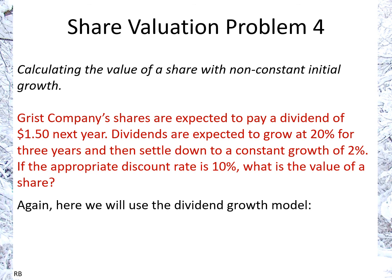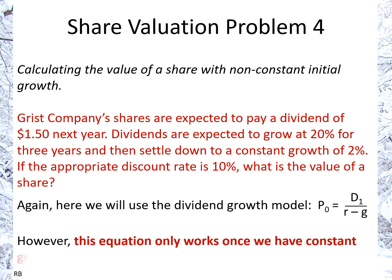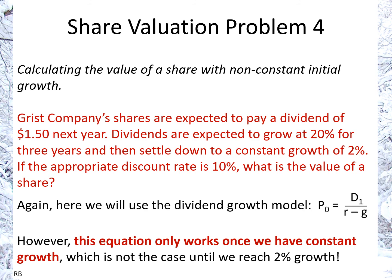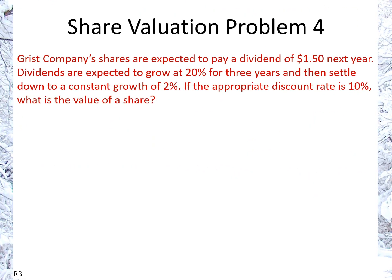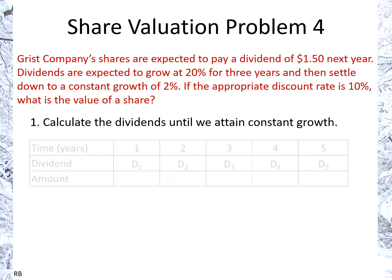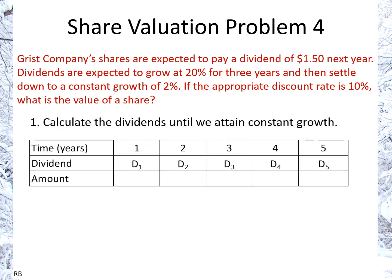Here we will use the dividend growth model, which is P0 equals D1 over r minus g. However, the equation only works once we have constant growth, and that's not going to be the case until we hit the constant growth of 2%. So first we'll calculate the dividends until we attain that constant growth.